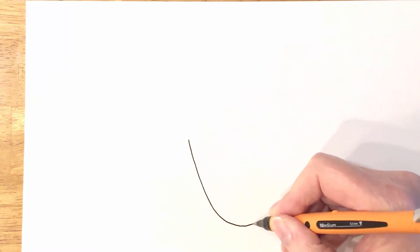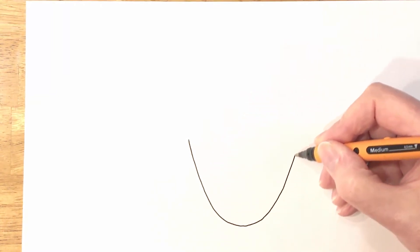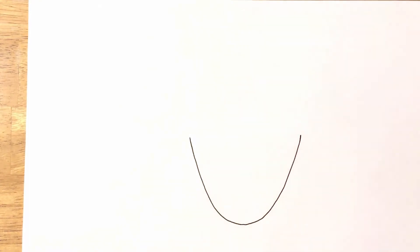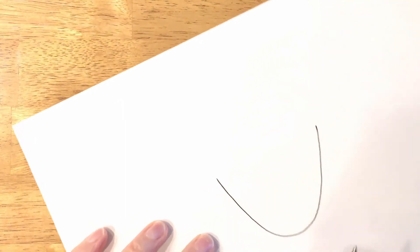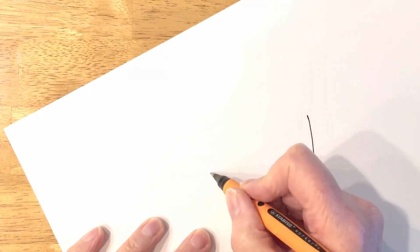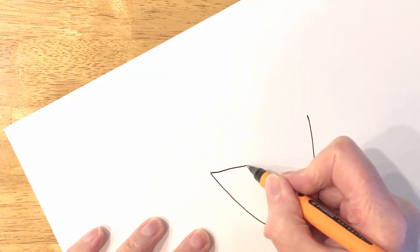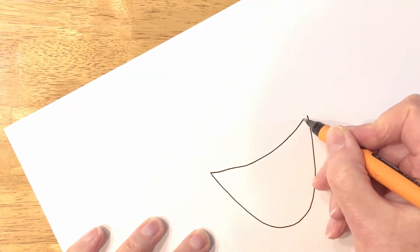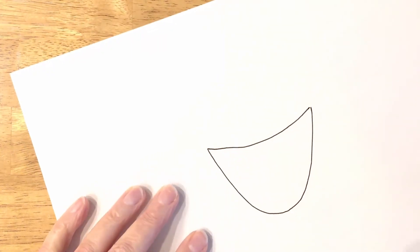You want to try and balance it so it looks pretty much the same on either side, but if it's not it doesn't really matter. So that's the base of my cup. I'm going to draw the front bit because I want to be able to see in this cup, so we're going to draw down a little bit. I'm going to draw from one side to the other.